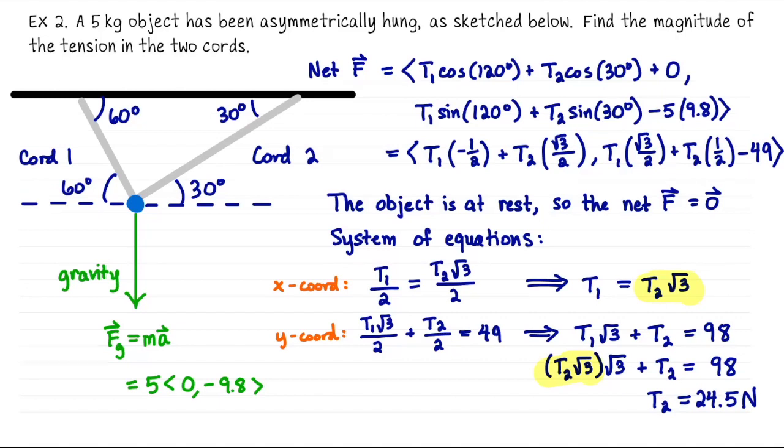So that's the tension in the second chord, the chord on the right. Using our relationship between T1 and T2, I can say that T1 is the square root of 3 times that, so T1 is 24.5 times the square root of 3 Newtons.